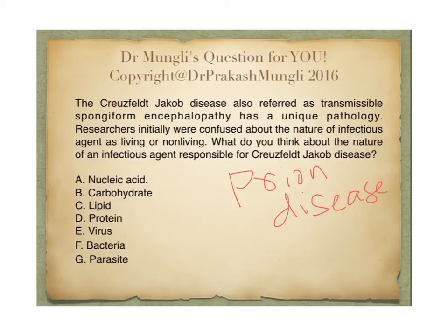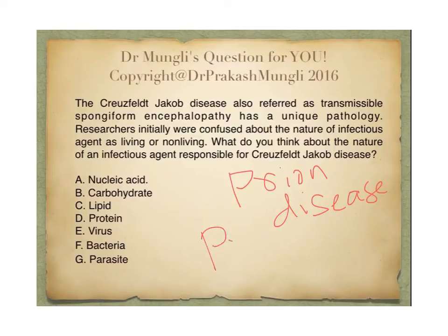Now what is the pathophysiology of prion disease? Initially scientists were confused about which was the infectious agent. Basically, prion disease is caused by an infectious agent that, if it gets into our body or is already present, will induce a change in the structure of a molecule. There is a protein in the neurological system called the prion protein.